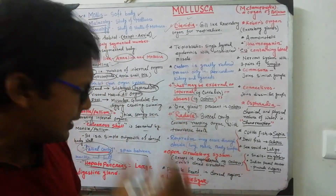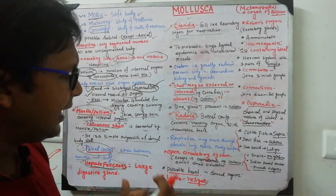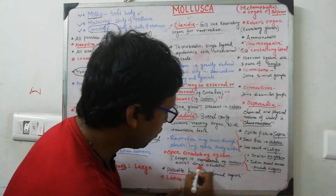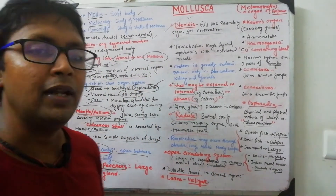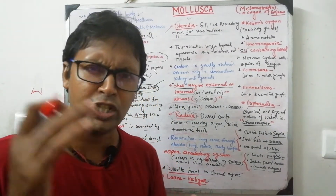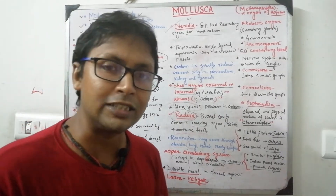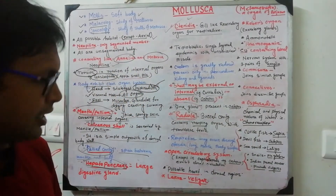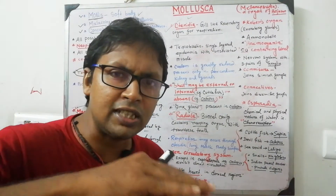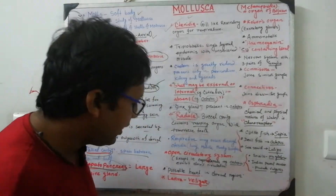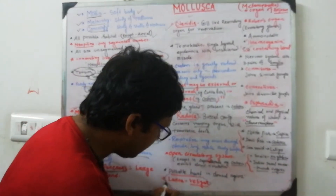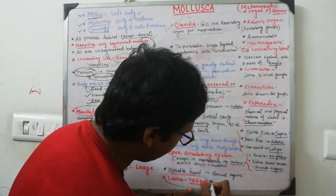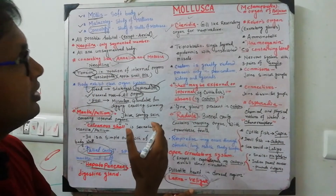The circulatory system in molluscs is open, except in cephalopods such as octopus, which exhibit a closed circulatory system. True blood is not present; instead, they have hemocyanin — a copper-containing, blue-colored respiratory pigment. A pulsatile heart is present in the dorsal region. The larval stage is called the veliger larva, which is unique to Phylum Mollusca.